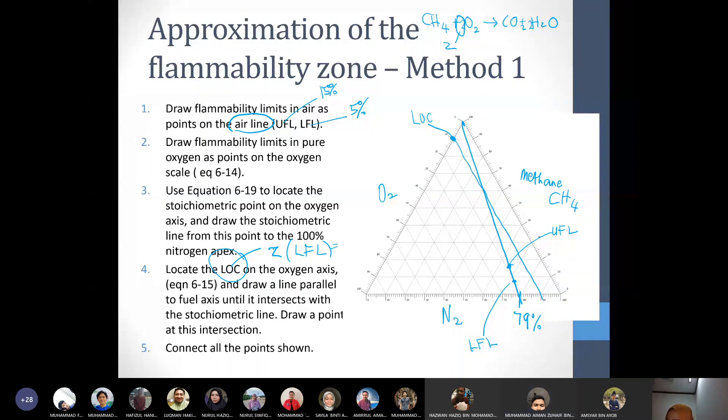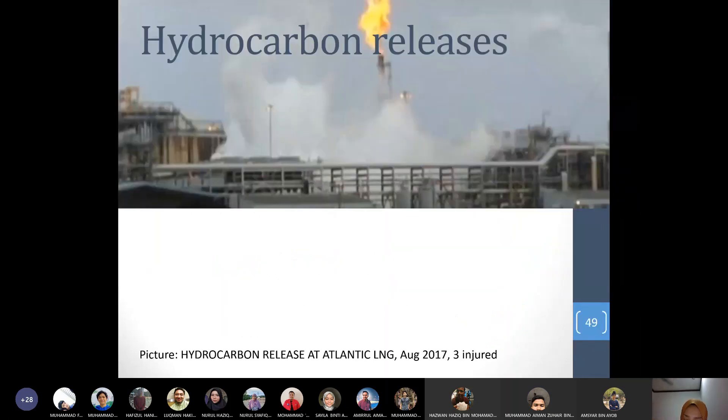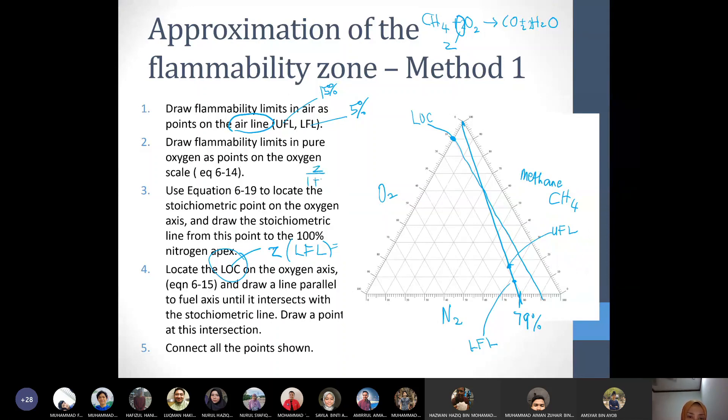Let's do the stoichiometric line. Using equation 6.19, locate the stoichiometric point. To find the point here is Z over 1 plus Z times 100. 2 divided by 3 times 100 equals 66.67. Okay, 66.7, around here.